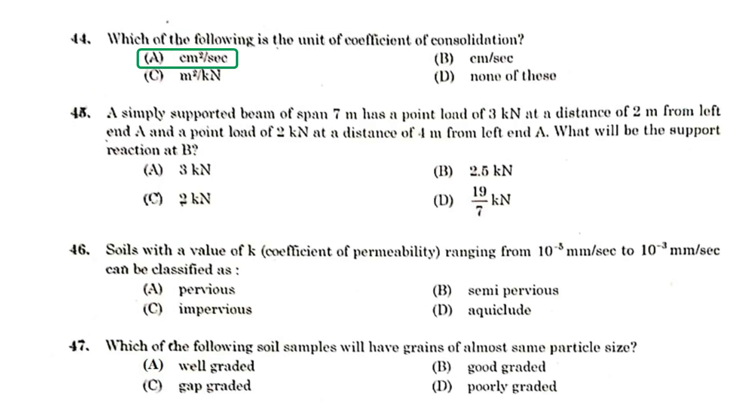A simply supported beam of span 7 m has a point load of 3 kN at a distance of 2 m from left end A and a point load of 2 kN at a distance of 4 m from left end A. What will be the support reaction at B? The answer is 2 kN.